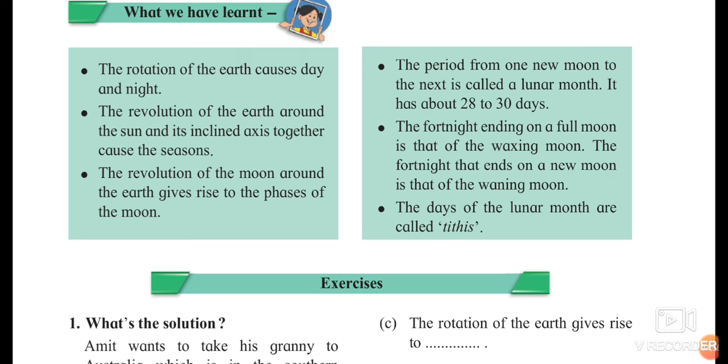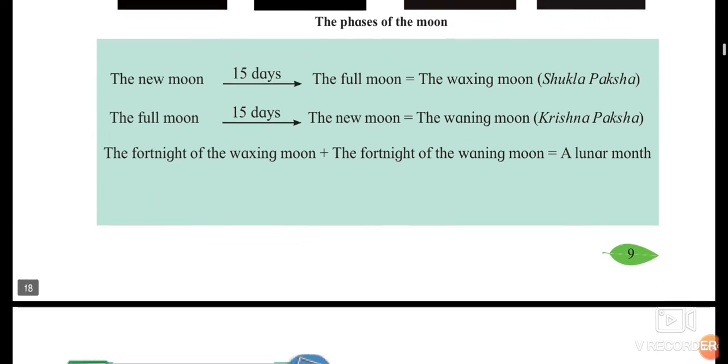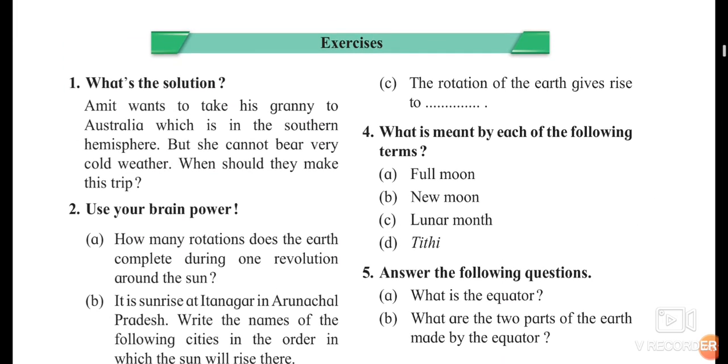Revolution of the moon around the earth gives rise to the phases of the moon. How we can determine the phases? Because of the movement of the moon around the earth.